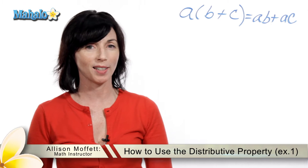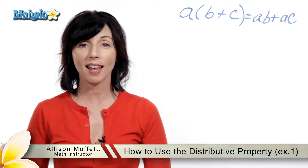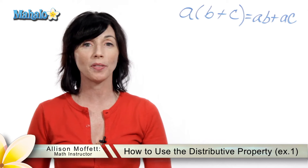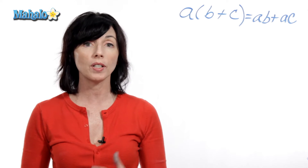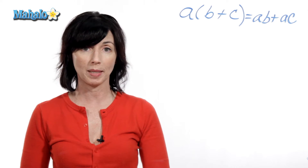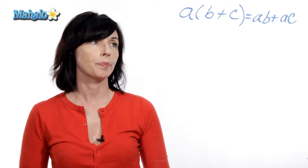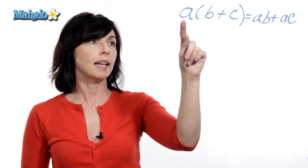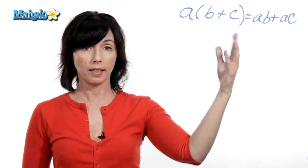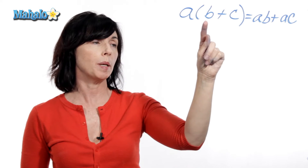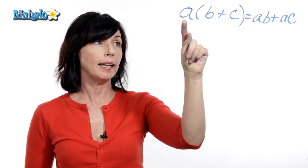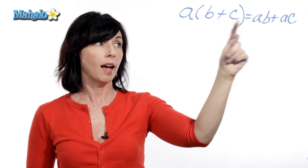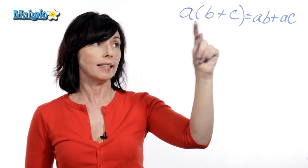Hey, it's Alison from mahalo.com and today I want to talk to you about the distributive property. The distributive property is one of several properties we have that governs how we do arithmetic. This is what it looks like: a times the quantity in parentheses, b plus c, is equal to a times b plus a times c.